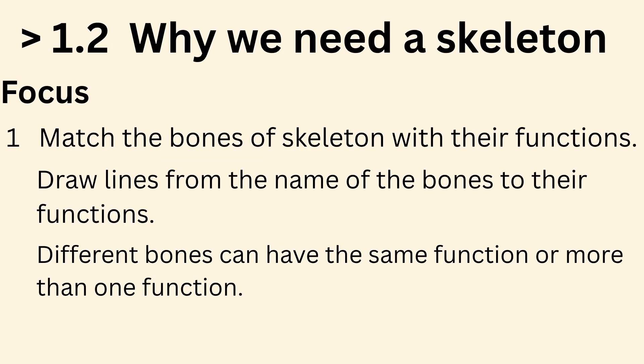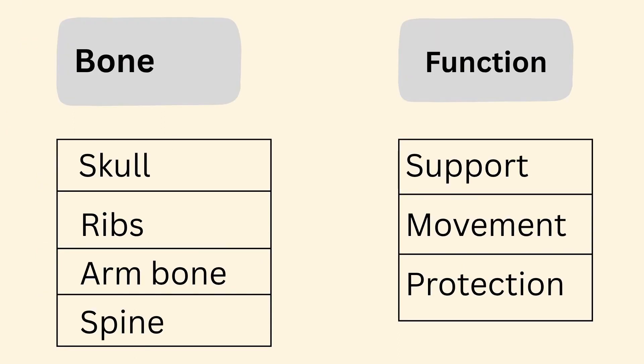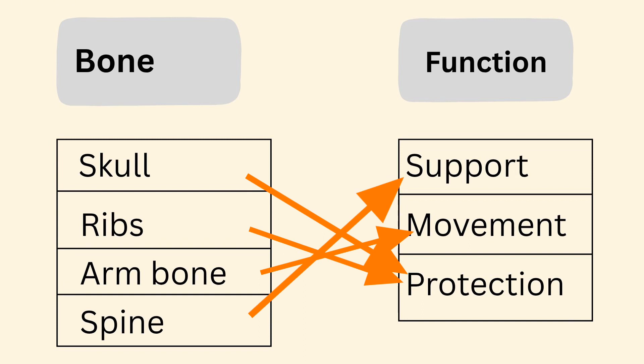1.2 Why do we need a skeleton? Focus. 1. Match the bones of the skeleton with their functions. Draw lines from the names of the bones to their functions. Different bones can have the same function or more than one function. Skull goes to protection. Ribs go to protection. Bones go to movement. Spine goes to support and protection.